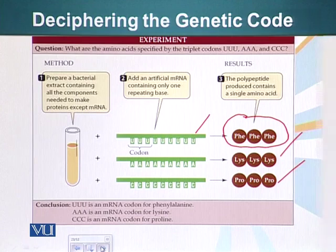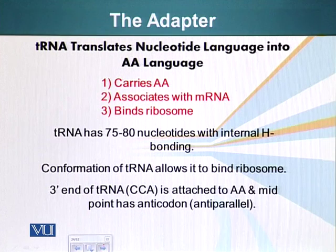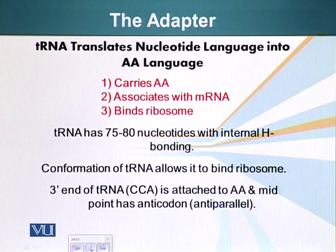Now we will talk about the adaptor, which is the molecule that interacts with the codons. The adaptor has to have three functions: it has to carry an amino acid on one part, one domain should carry an amino acid; it should be able to associate with messenger RNA to interact with the codons; and it should be able to bind ribosomes, since ribosomes are responsible for synthesizing proteins. tRNA is the adaptor.